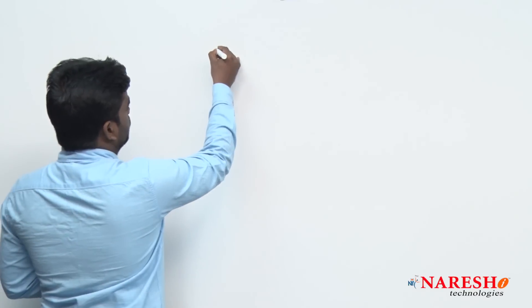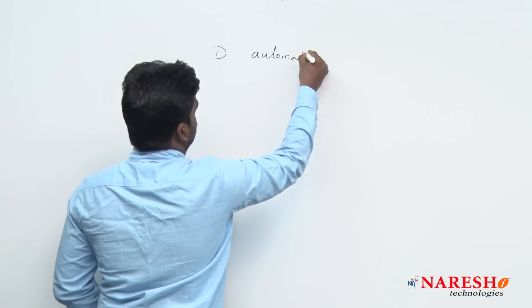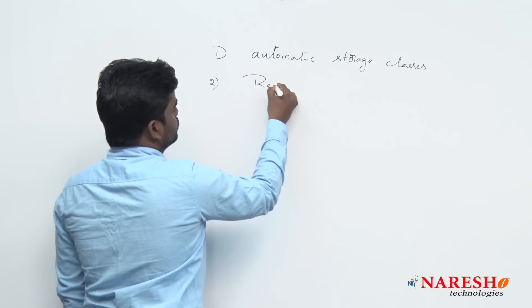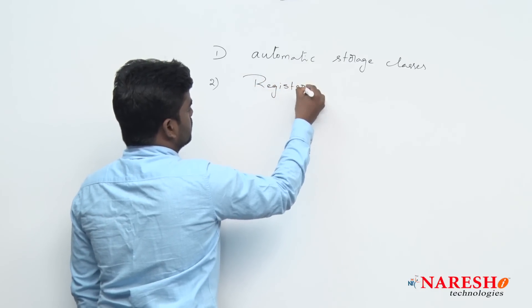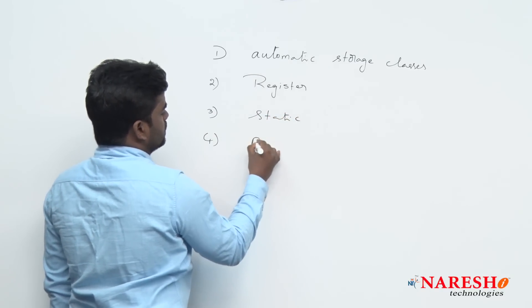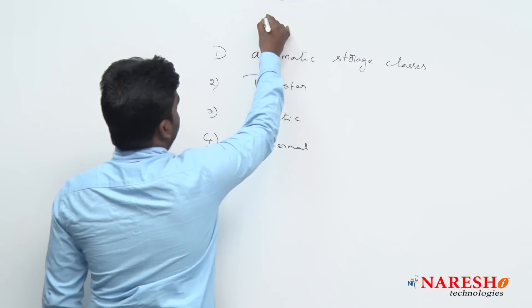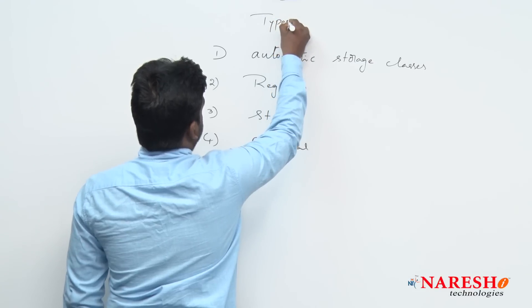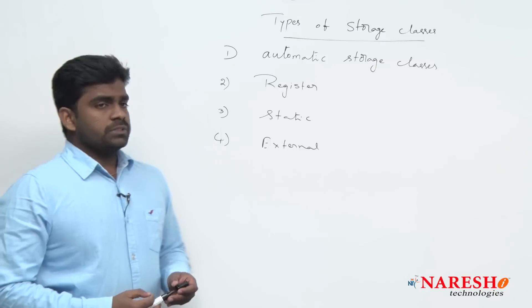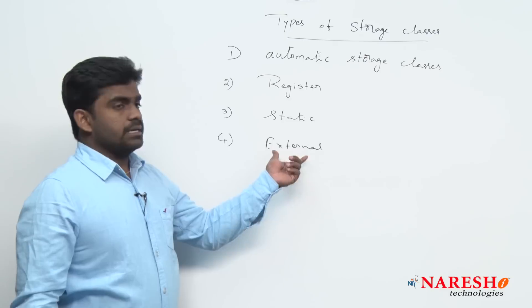We have four storage classes. One is automatic storage class, second one is register storage class, third one is static storage class, and fourth one is external storage class. These are the four types of storage classes — automatic, register, static, and external.